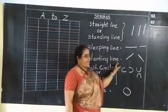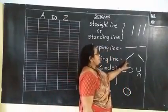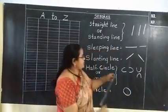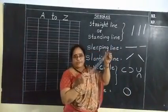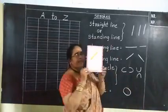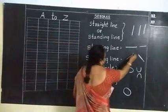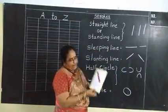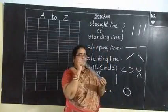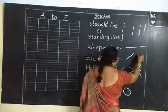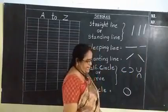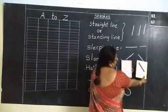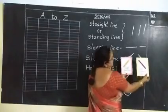This is sleeping line. Sleeping line will be like this. This is a slanting line. This is right slanting line — right to left. See here, this is right slanting line. And the next one is left slanting line — left to right. This is left slanting line. These two are slanting lines.